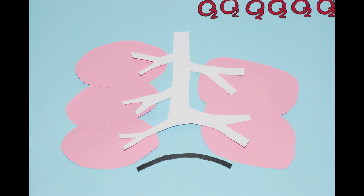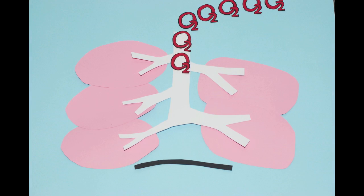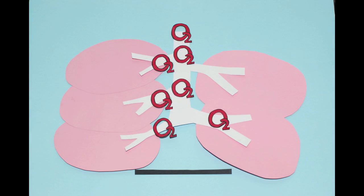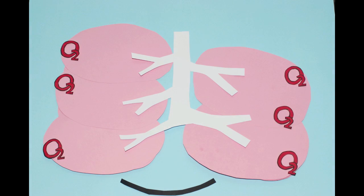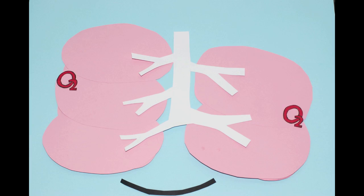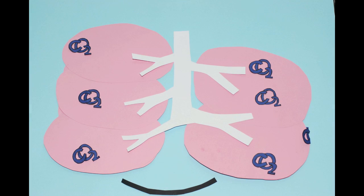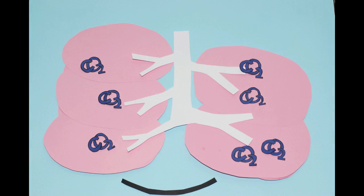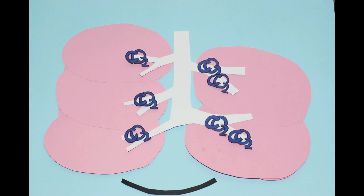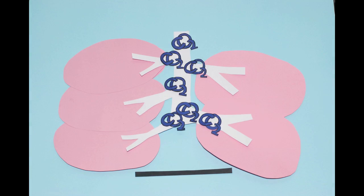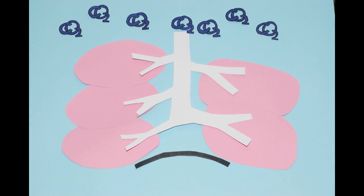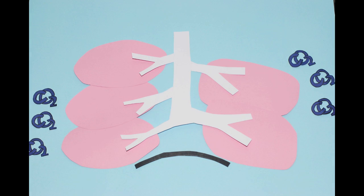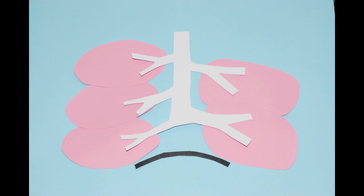Now, when the lungs inhale oxygen from the environment, all of the oxygen is used in the lungs. And when the lungs exhale, all of the carbon dioxide is expelled from the lungs to our environment. The lungs are now more efficient, therefore the lungs have a larger lung capacity.